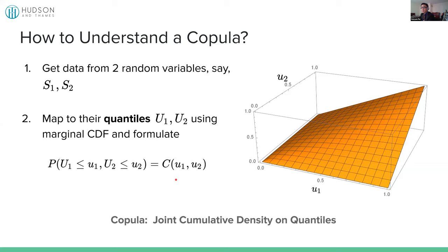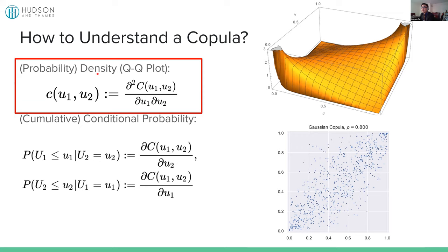What do we use? First, the probability density — the pointwise density of the copula — that's how the QQ plot was formed. You calculate the pointwise density by taking partial differentiations with respect to the two variables respectively. This is generally used for maximum likelihood fitting for copulas to data: you multiply all the densities together and take a logarithm to get the log maximum likelihood. The next thing — conditional probability — is used for trading mostly. You take the partial differentiation on one of the variables to achieve the cumulative conditional probability.